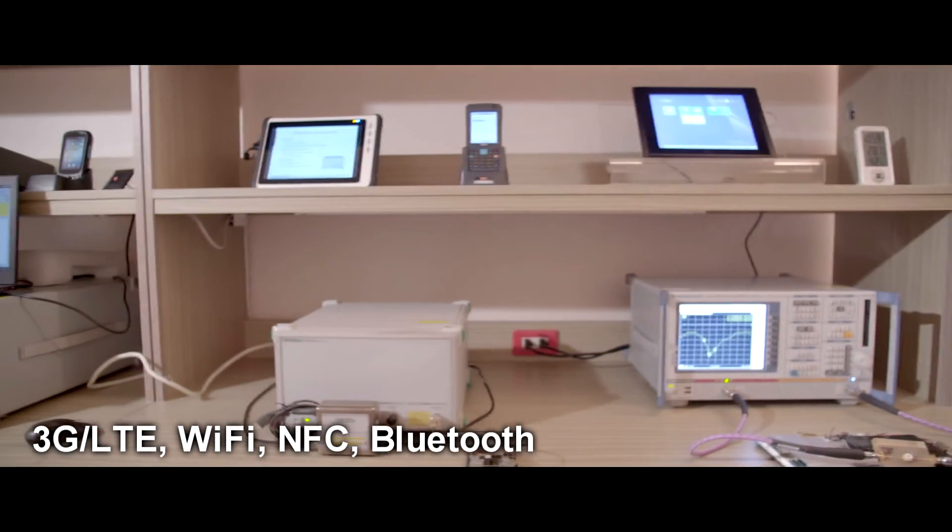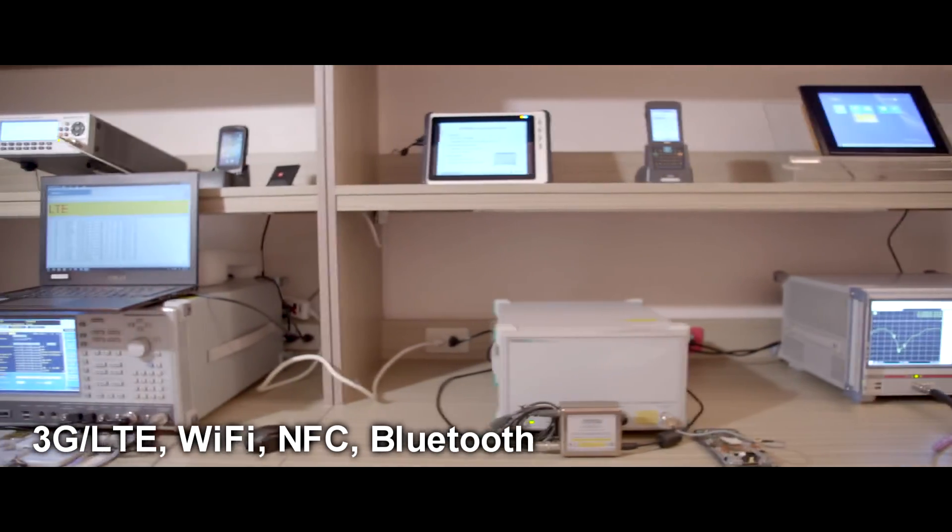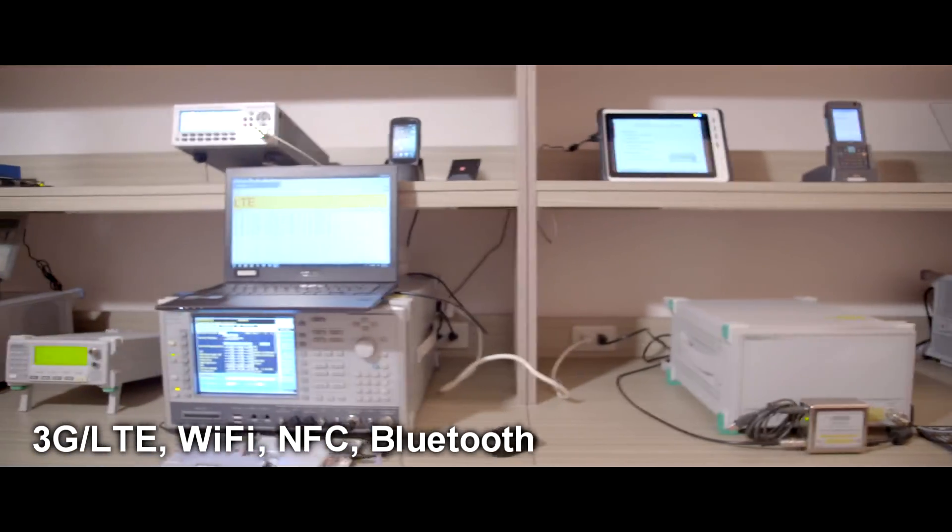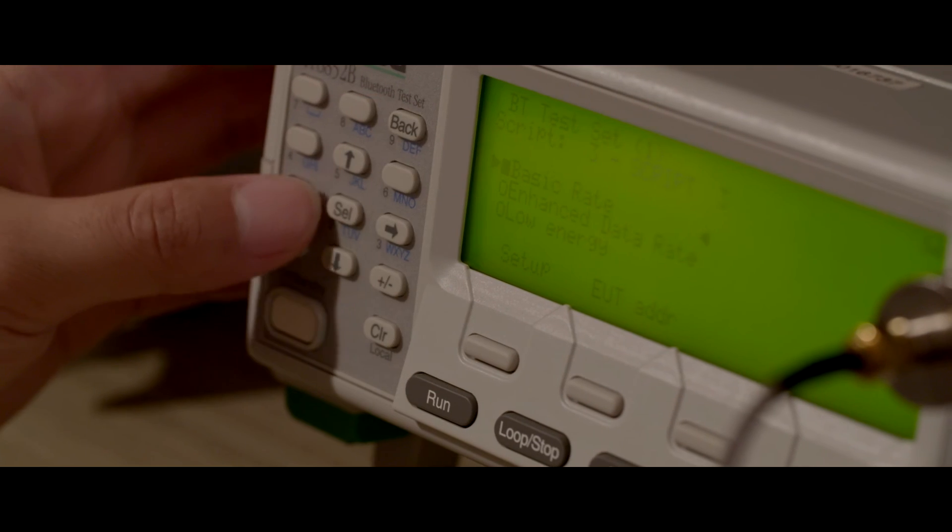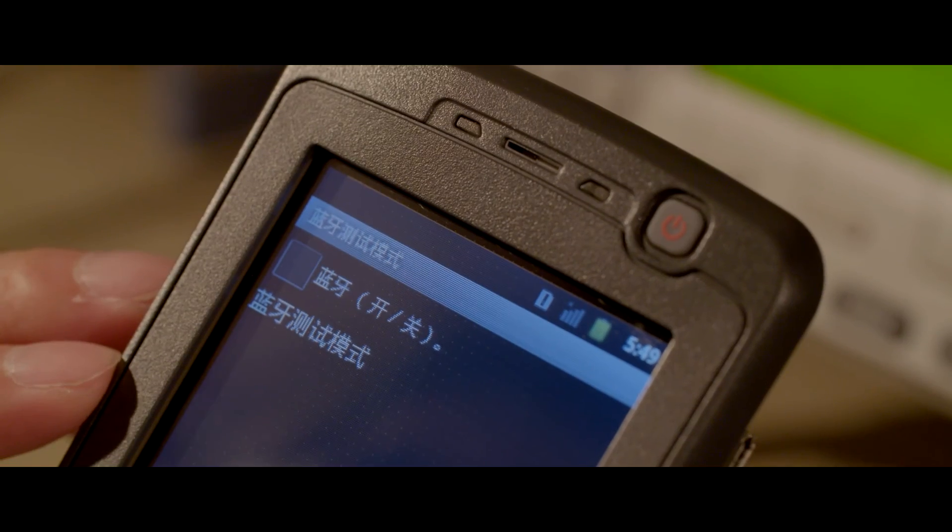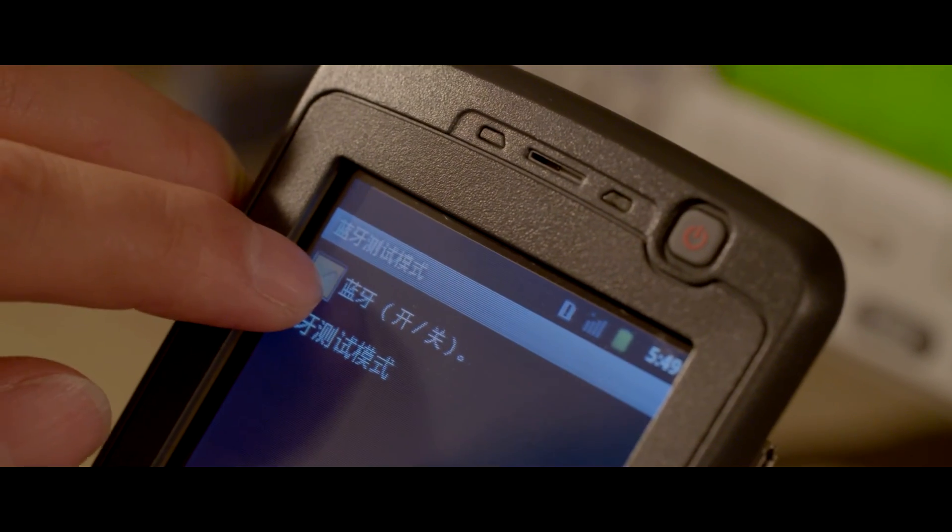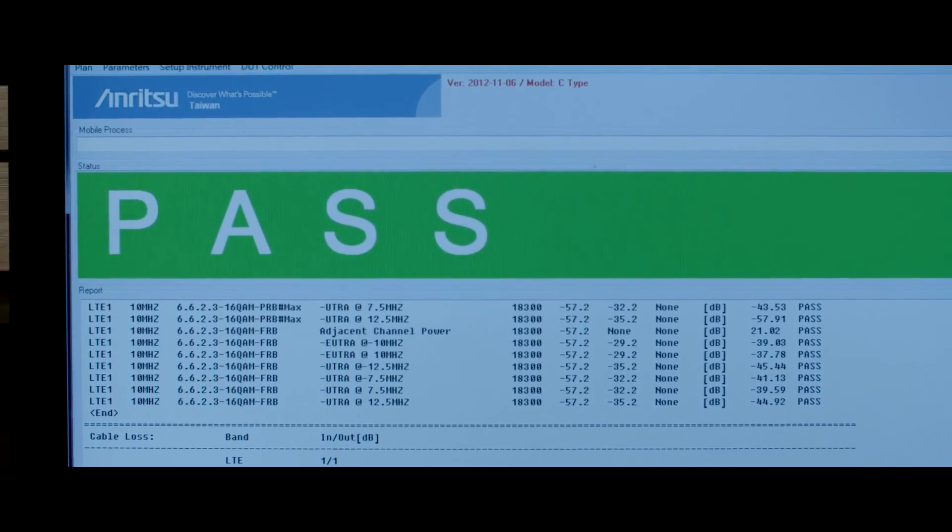Measurement verifies 3G LTE, Wi-Fi, NFC and Bluetooth functionality via instrumentation including a variety of RF spectrum analyzers and specialized function testers for conductivity and radiation testing.